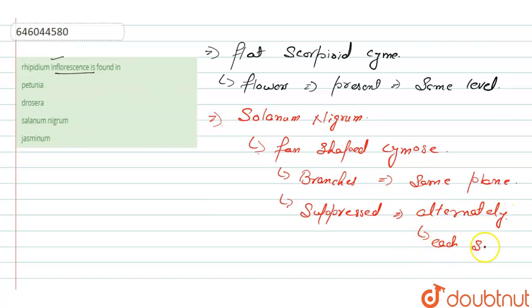So the correct option for our question is option number three. Talking about the first option, Petunia contains the monochasium kind of cymose, or monochasium cyme.